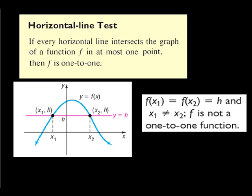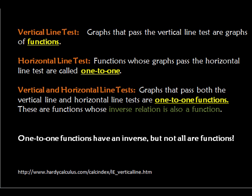A really easy way to determine if a function is 1-to-1 is the horizontal line test. Basically, if you draw a horizontal line and it touches the function anywhere twice, that is not 1-to-1, because x1 and x2 go to the same y value. The vertical line test only tells us if the graph is a function, while the horizontal line test tells us that the function is 1-to-1. If both tests are true, that means this is a 1-to-1 function, and the inverse of that 1-to-1 function is also a function.